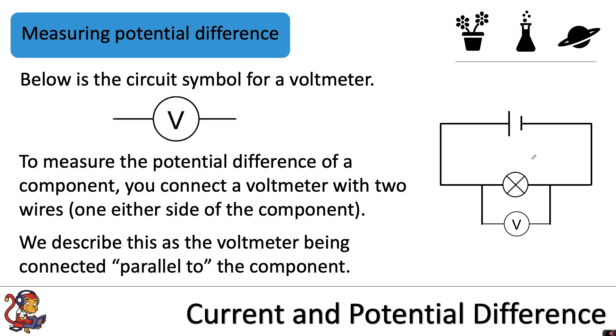So if we wanted to measure the potential difference of this lamp, we would need to connect a wire either side of the lamp to this voltmeter.